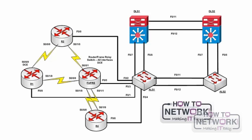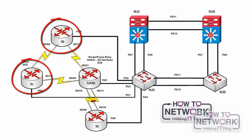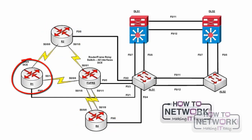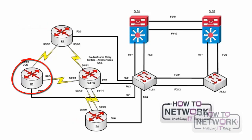We're going to be working on routers 2, 1, and 4. Router 1 is going to be the device we configure NAT on. Router 4 will be our inside device, and router 2 will be an internet device. Router 4 will be trying to communicate to router 2, and router 1 will be NATing that traffic. We're going to do everything on router 1 today — whether it's NAT, PAT, or NAT Virtual Interface.